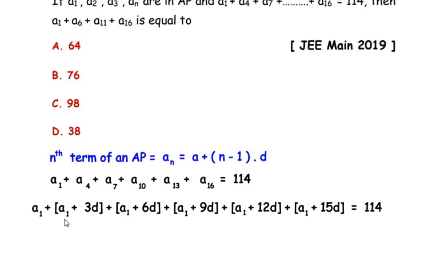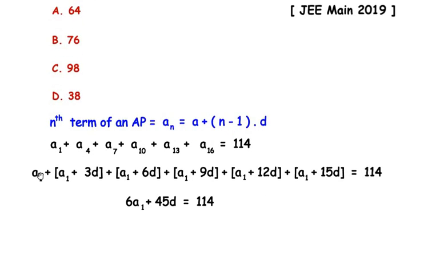Now adding the like terms, that is a1 which has appeared many times, we get 6a1 because a1 appears 1, 2, 3, 4, 5, and 6 times. Plus adding the common differences, that is 3d plus 6d is 9d, 9d plus 9d is 18d, 18d plus 12d is 30d, and 30d plus 15d is 45d, equal to 114.